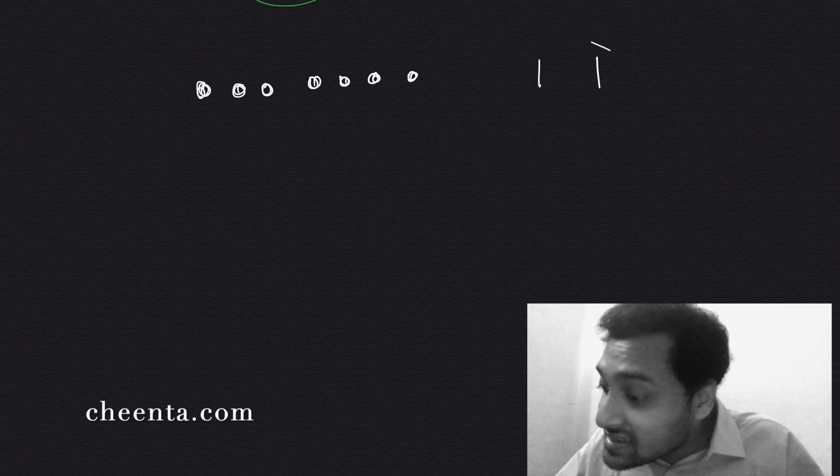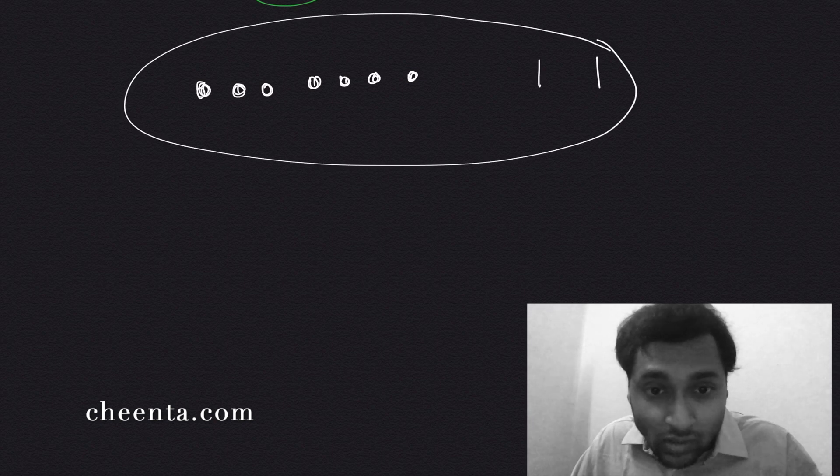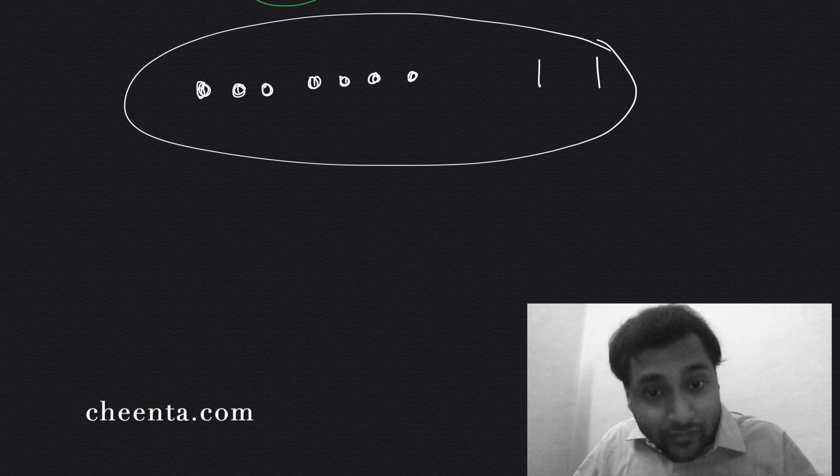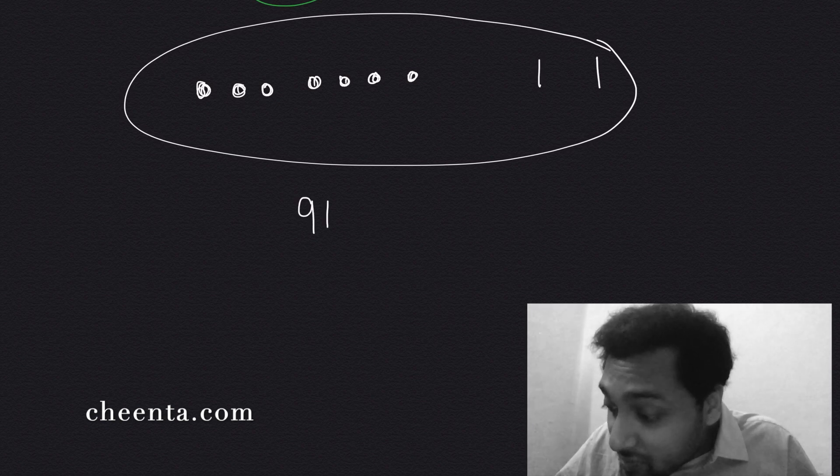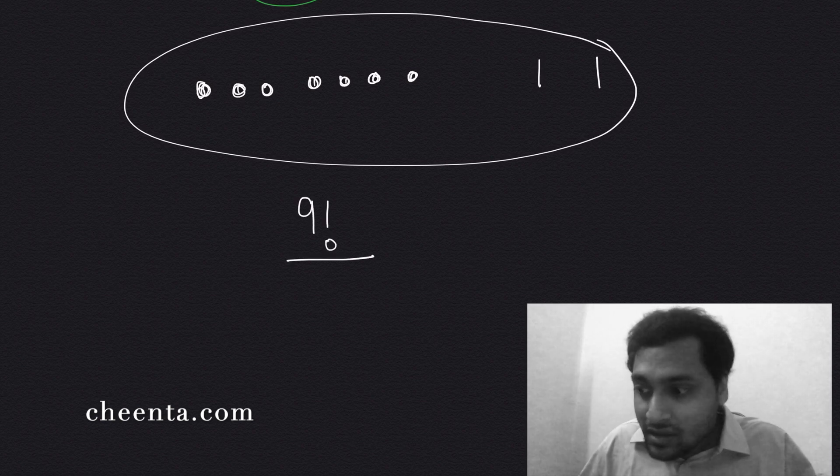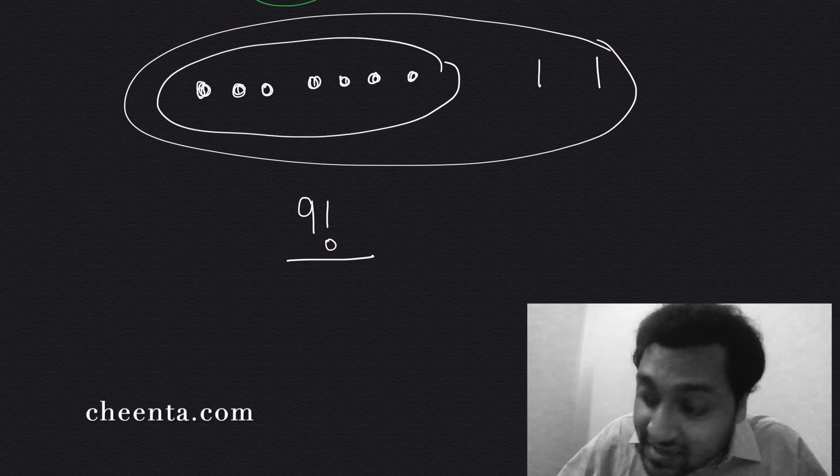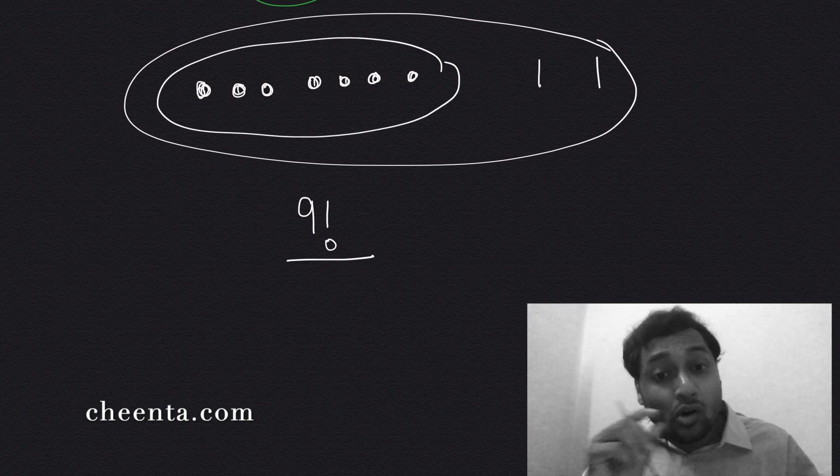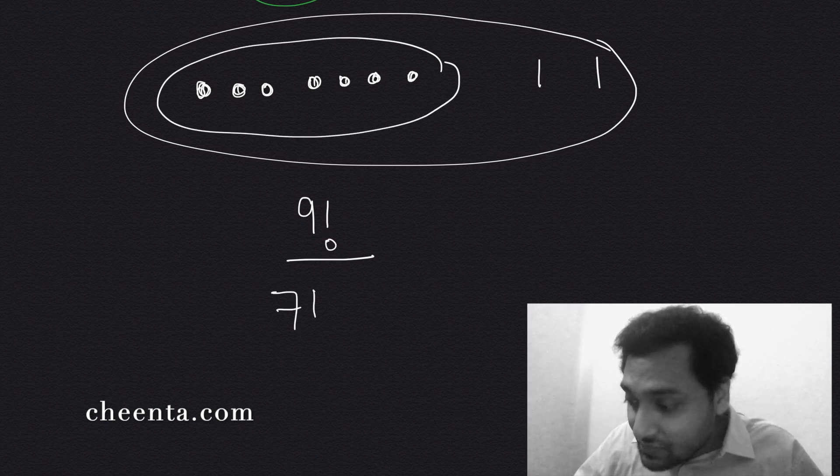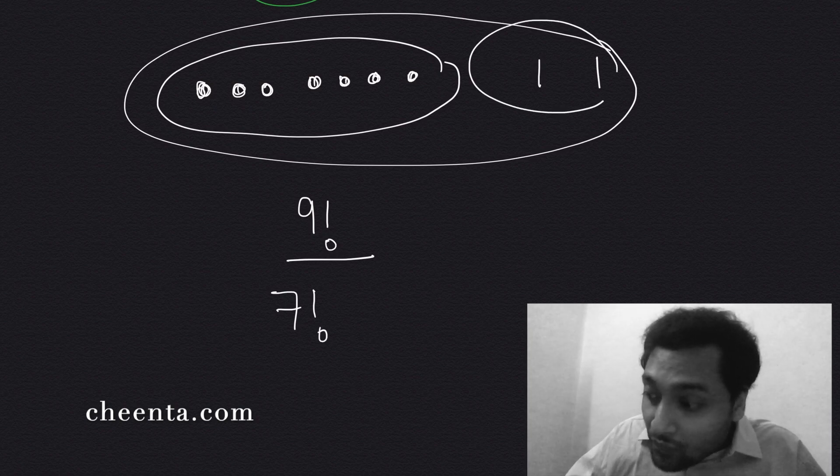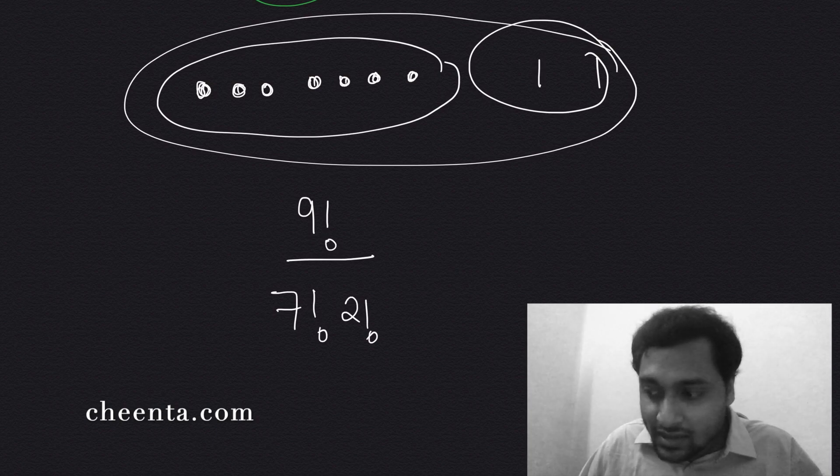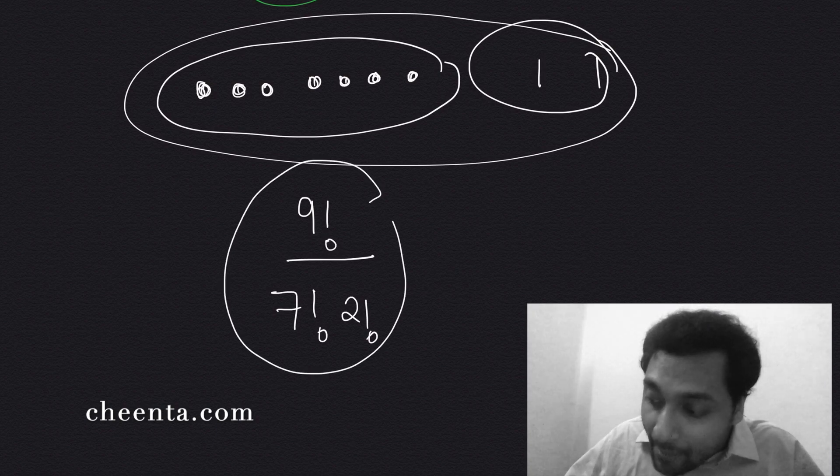So how many ways can we arrange these nine symbols? Well, if all of them were different, then that would have been 9 factorial. But notice that seven of these are same. All the balls are same. So it's divided by 7 factorial, and two of the bars are same. So divided by 2 factorial.